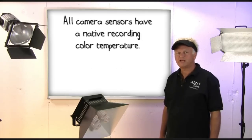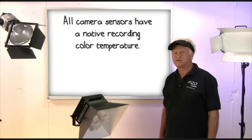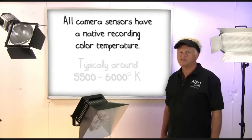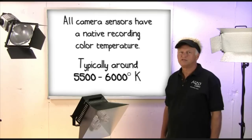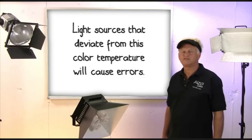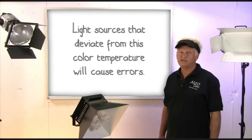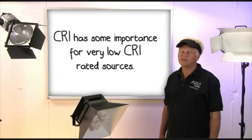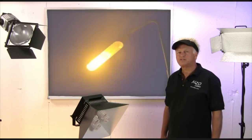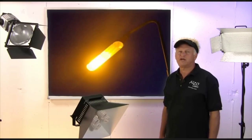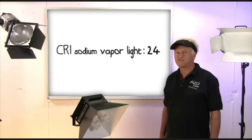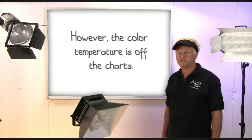All camera sensors, CMOS or CCD, have a native recording color temperature where the raw image will be rendered accurately. This color temperature is typically around 5,500 to 6,000 degrees Kelvin. Light sources with color temperatures that deviate from this native color temperature require software compensation, and this process can cause color render errors. I will concede that CRI has some importance for very low CRI rated sources. For example, high pressure sodium vapor lights will present rendering problems with all video cameras, and the CRI of a sodium vapor light is around 24. But also keep in mind that the color temperature of a sodium vapor light is off the charts. So our conclusion is that the color temperature of a light source is the most important factor in color rendering quality with a video camera, and not the CRI.